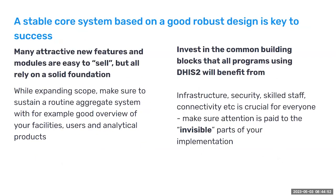Another key principle is that a stable core system is based on a robust core design. You do not want to add very fancy things on top of something that is not stable. Sometimes it can be attractive to plan for big advanced projects, and countries or organizations can forget the basic things underneath — like paying the electricity bill or buying knives and pots and pans. Make sure you also invest in common building blocks that all programs using DHIS2 will benefit from — infrastructure, skilled staff, connectivity. These are sometimes overlooked invisible parts of your DHIS2 system, but nevertheless very important.